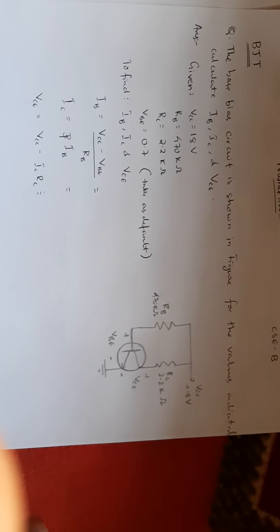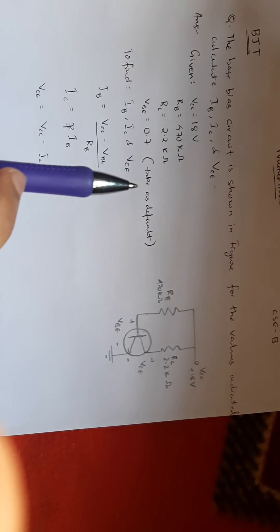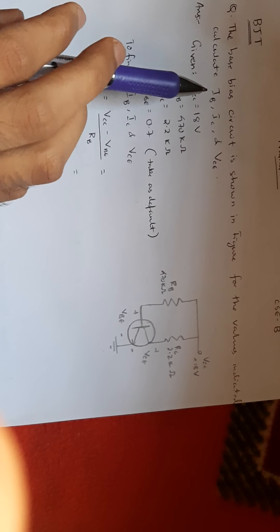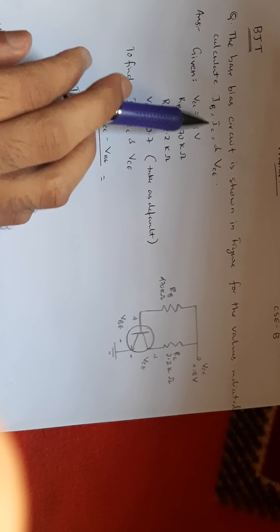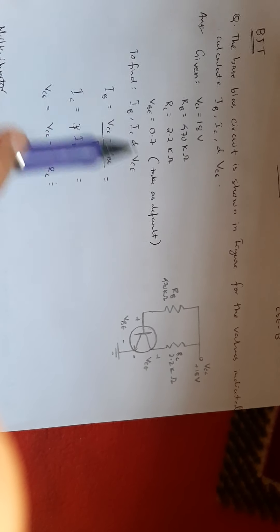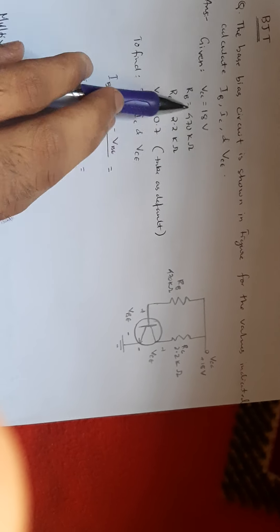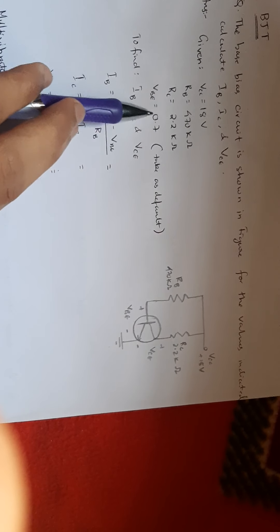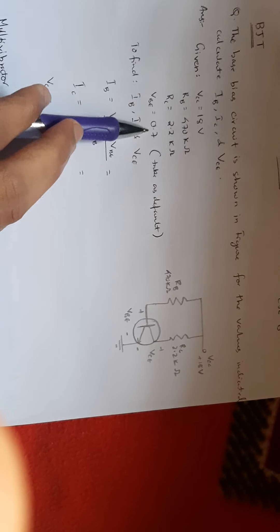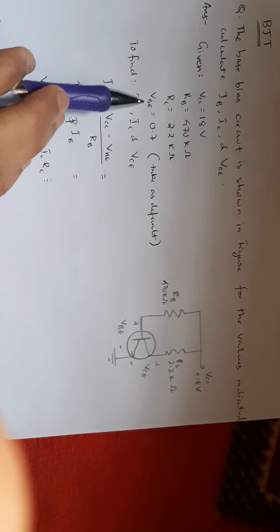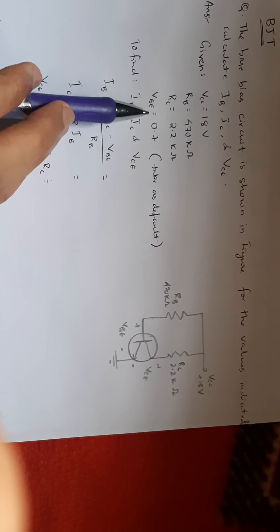Let's get started with the first topic: BJT. For BJT I have taken one example. The formulas are slightly different for different types of BJT but the things are the same — we have to calculate IB, IC, and VCE. For VBE, if they don't give anything, take the default as 0.7 for silicon. If it's germanium, they will specify and you use 0.3.